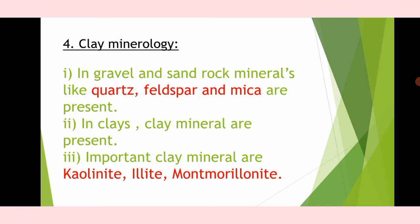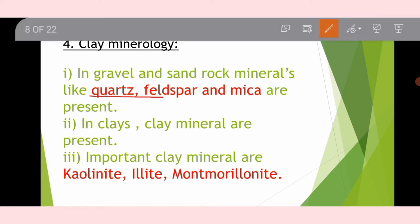The clay minerals are generally kaolinite, illite, and montmorillonite. Quartz, feldspar, and mica are rock minerals found in gravel and sand, while kaolinite, illite, and montmorillonite are clay minerals.